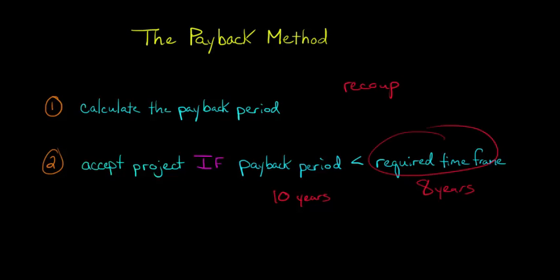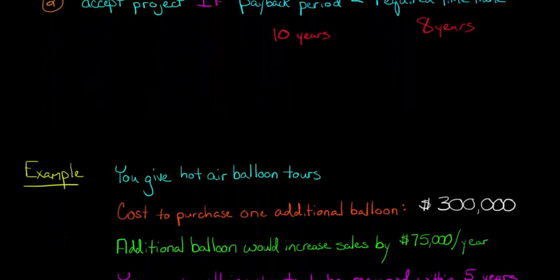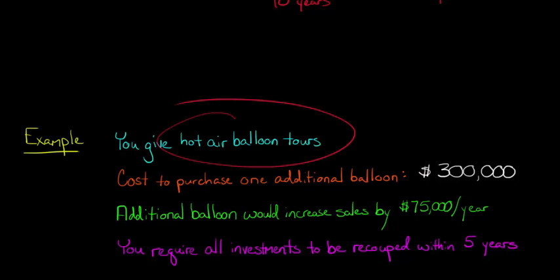The required timeframe is up to your firm. It's up to your CEO or your manager. So this is going to vary on a firm-by-firm basis. So let's jump into an example. It will make it a little easier for you to understand. Let's say that you have a company that gives hot air balloon tours. And let's say that you're thinking about buying an additional balloon. You're saying, hey, you know what, I actually could get another balloon and then I'd be able to give more tours and make more money.